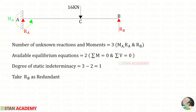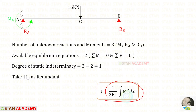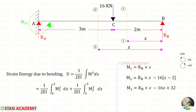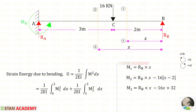Let us keep the prop reaction RB as the redundant. To find RB we can use the strain energy formula: 1 upon 2EI times the integration of M squared dx. To find the moment M we have to make sections in this beam. There are two different parts BC and CA, so we have to make two sections — both at distance x from point B. The limit for the first section is 0 to 2 and for the second section is 2 to 5.